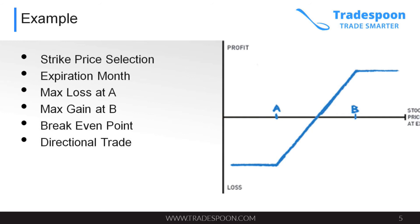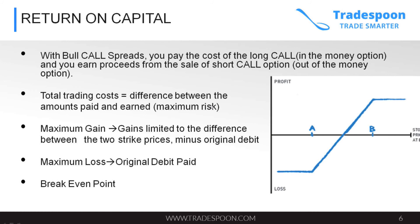What is your breakeven point? Your breakeven point is the debit price that you paid, and that's where the x-axis intersects the blue line on the chart. It's a directional trade with a bullish bias. To calculate return on capital — very important for a debit spread — the maximum gain is the difference in strike prices: point B minus point A, minus the original debit that you paid. Your maximum loss is the original debit that you pay, which is the premium paid for the debit spread. The maximum loss occurs at the intersection of the x-axis and the blue line — that is your breakeven point.